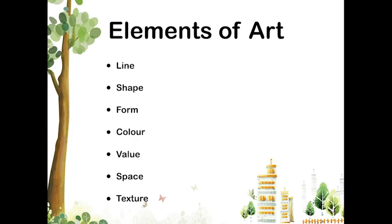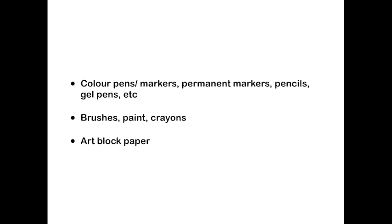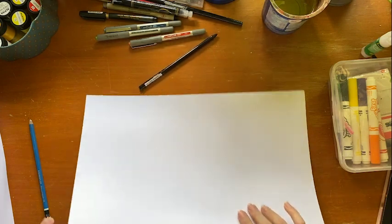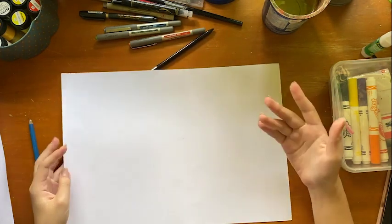Let's recap on the elements of art. We will only be focusing on the first three: lines, shape, and form. Next week we'll go into color, but today let's focus on line, shape, and form. Before we get started, please go and gather your materials. Go around your house and get as much from the list as you can. If you don't have one or two things it's okay, but it's very important that you have art block paper.